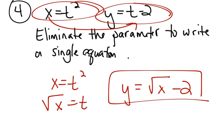On the final, if you aren't sure you picked the right solution, change your calculator to parametric mode, graph the two equations, look at what the graph looks like, and find which multiple choice answer has the same graph.